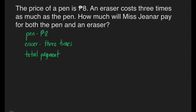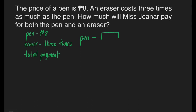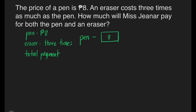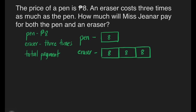We can use the block model approach so it's easy for students to visualize. For the pen, we'll have 1 box with 8 pesos inside. For the eraser, which is 3 times as much, we'll draw 3 boxes with 8 pesos in each box. We need to get the value of the eraser first. 8 plus 8 plus 8 is 24 — or 8 times 3 is equal to 24 pesos.